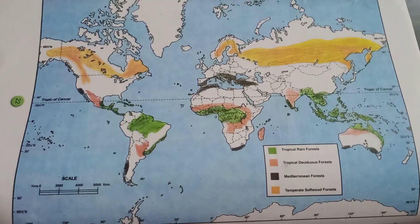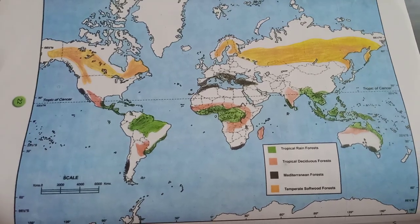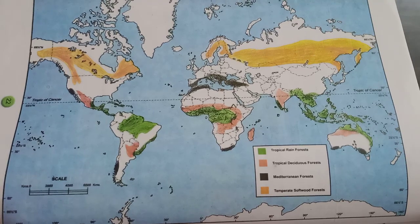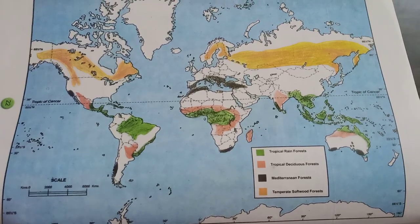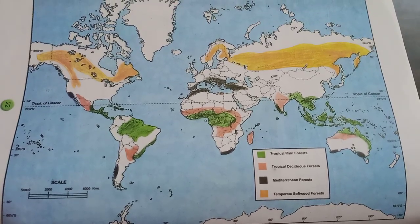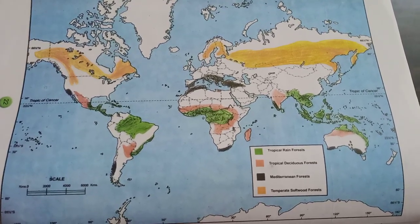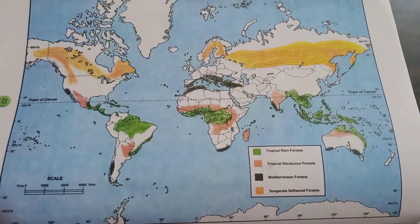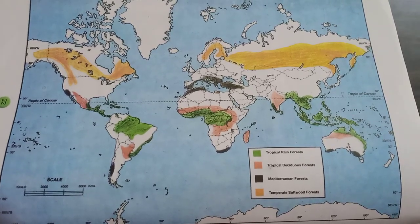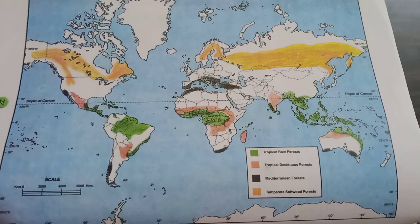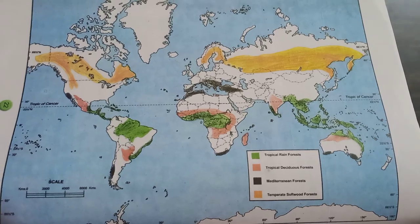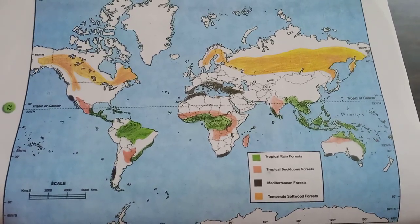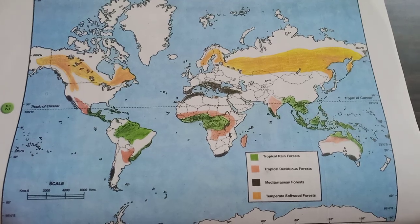Hello children, you can see here the map of the world. It is showing the distribution of types of forest. The green color is showing us the tropical rainforest.